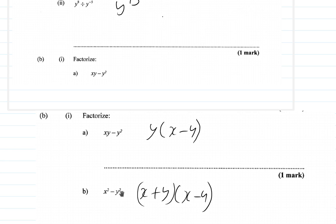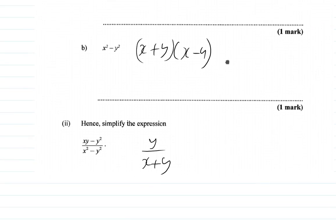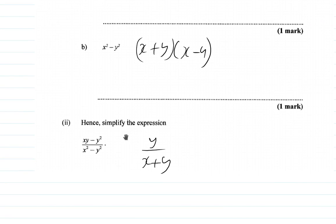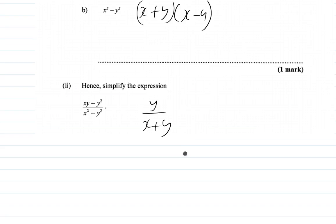When you factorize x squared minus y squared, you get x plus y times x minus y. And then hence simplify this expression. And I get y over x plus y as my answer here.